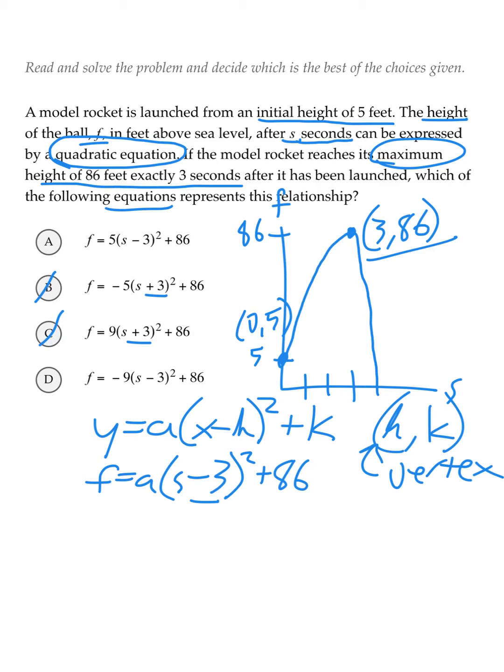Starting with answer A. If we made f equal 5 and s equal 0, we could see if that coordinate works in this equation, thus proving it is an equation that works for all points on the parabola. 0 minus 3 is negative 3, and negative 3 squared is 9. So we have 5 times 9 plus 86. 5 times 9 is 45 plus 86.